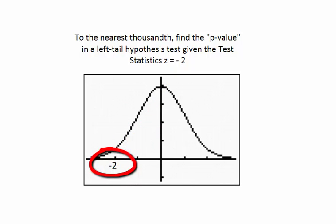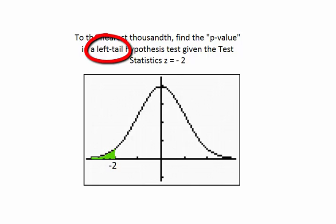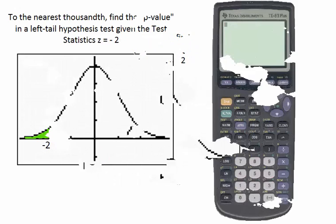The p-value in a left-tailed hypothesis test is the area under the normal curve to the left of negative 2. So given a left-tailed hypothesis test and a test statistic, to find the p-value we need to find an area.